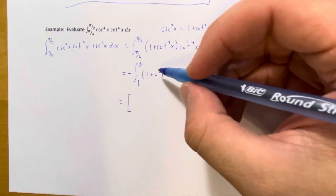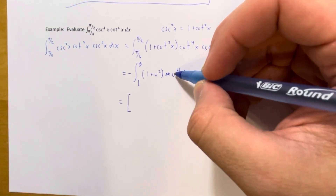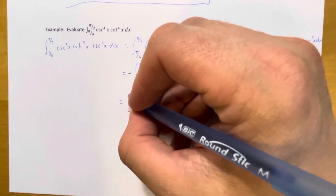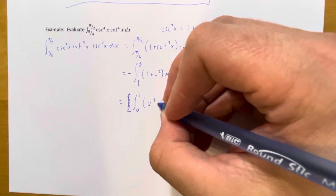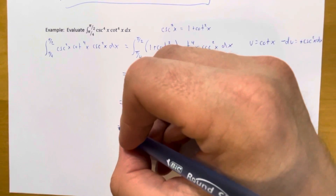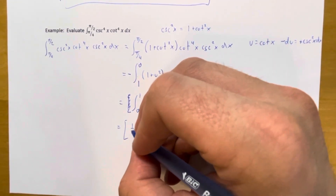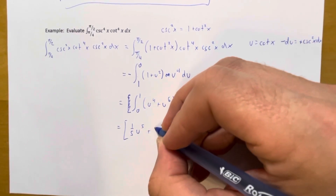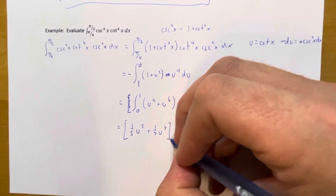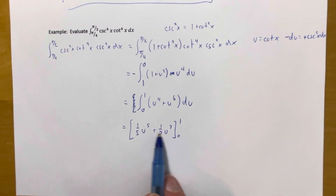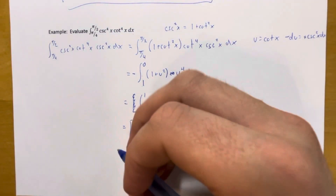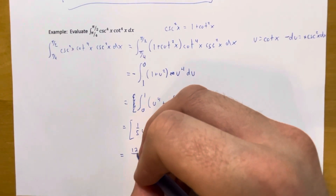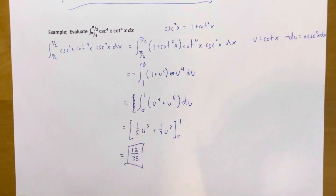With limits now from 0 to 1, we distribute u to the fourth: the integral of u to the fourth plus u to the sixth du. Integrating gives one-fifth u to the fifth plus one-seventh u to the seventh, evaluated from 0 to 1. Plugging in 0 gives zero; plugging in 1 gives one-fifth plus one-seventh, which equals 12 over 35. That's the final answer.